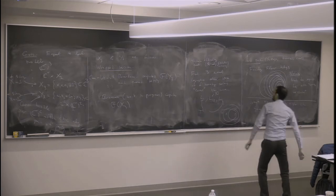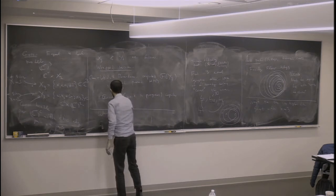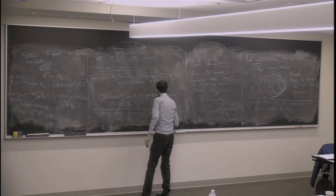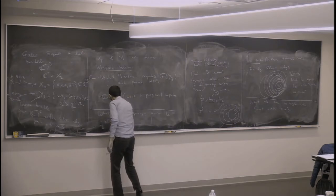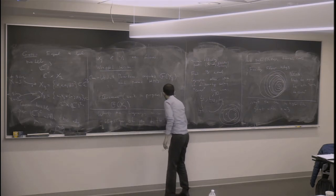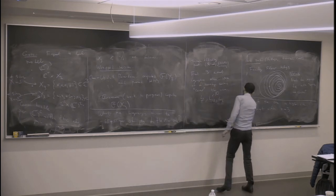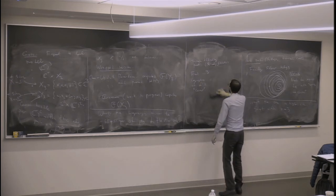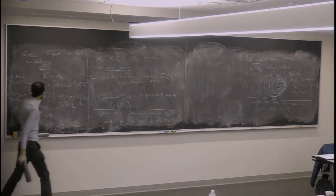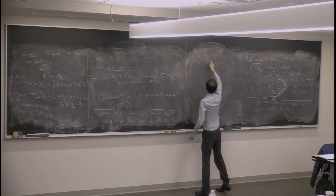What I want to do instead is talk about the medium difficulty proof. What are the Lagrangians in the Fukaya category mirror to skyscraper sheaves at points on the other side? Let's start with the one that's actually harder — I think people will find it more interesting. I want to start by looking at the Fukaya category of X₃, looking at Lagrangians in X₃.